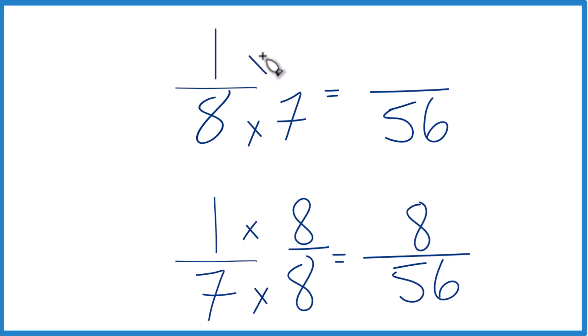Up here, 1 times 7, that gives us 7. Now we have the same denominator. We can compare the numerators.